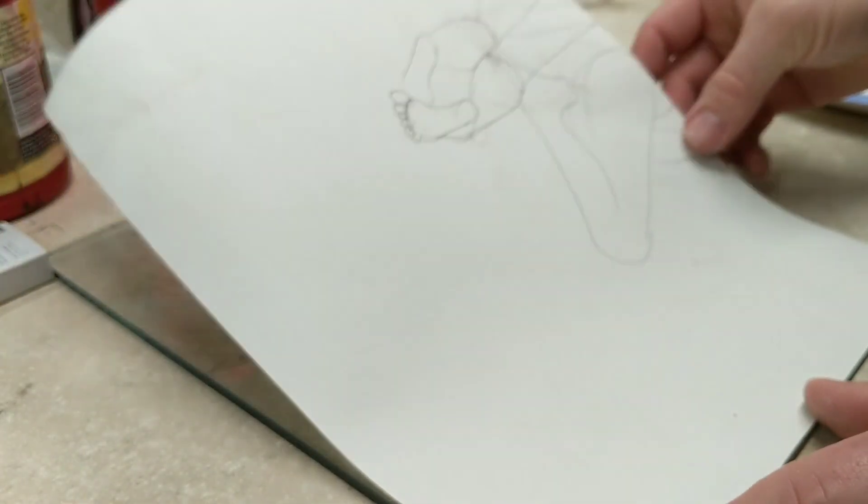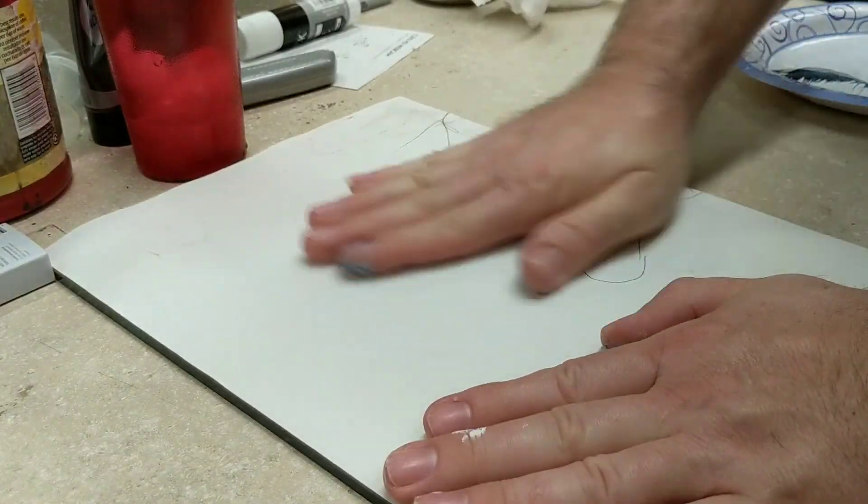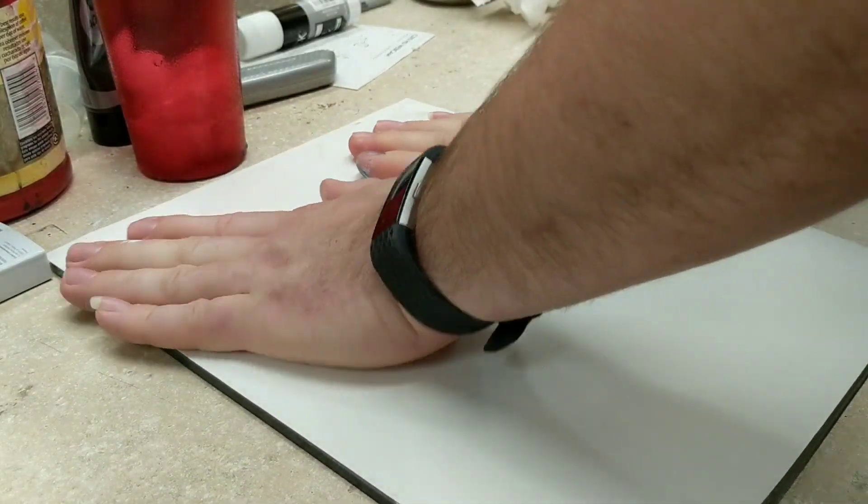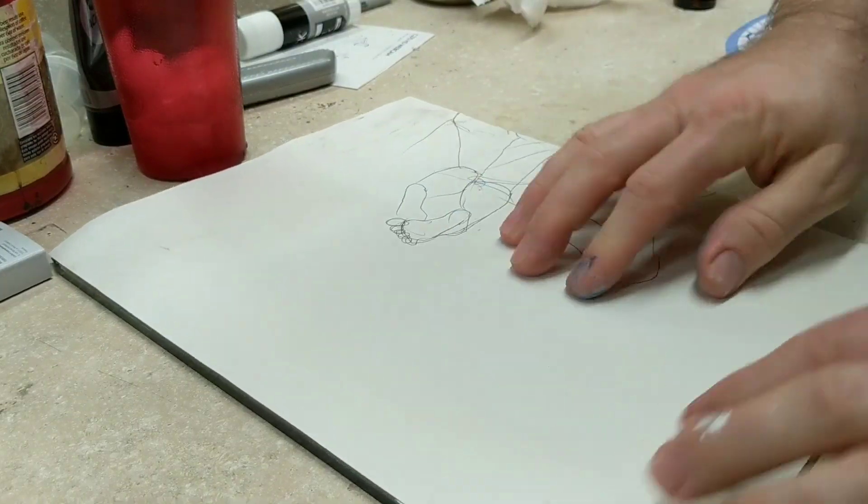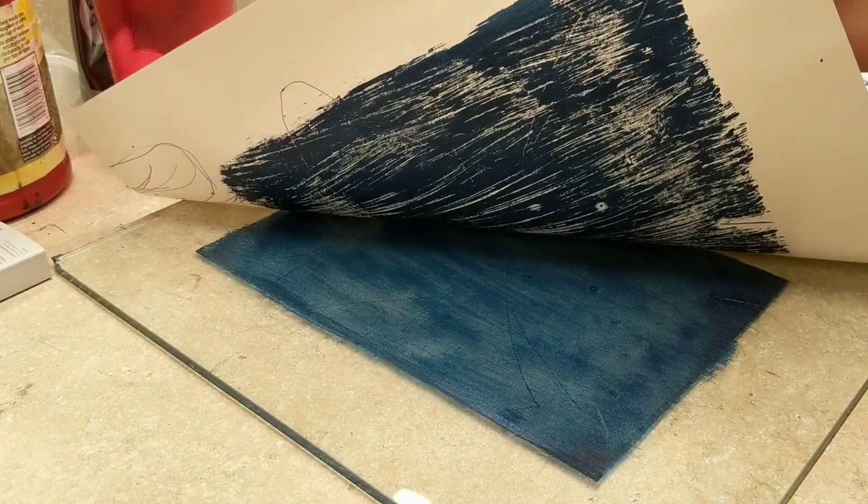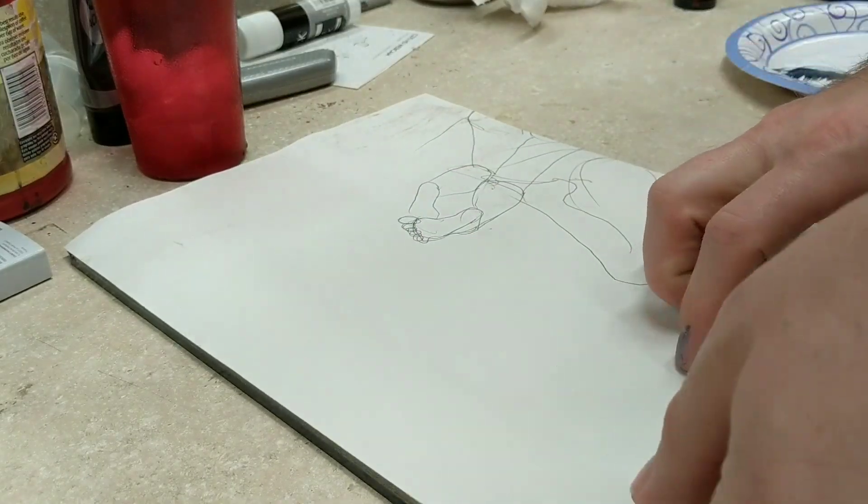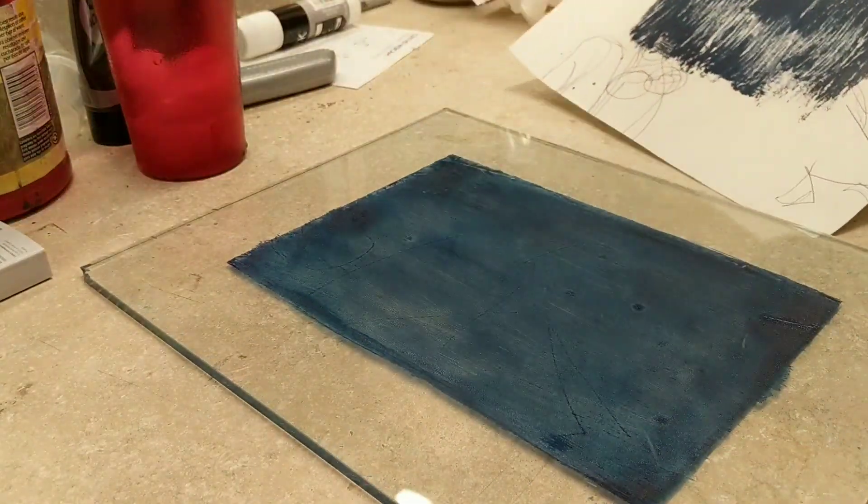I went ahead and put the paper down. And so now I just have a nice blue rectangle in the middle of my paper. And it's not going to be solid because this is a monoprint. It doesn't get all of the ink, all of the acrylic paint up.